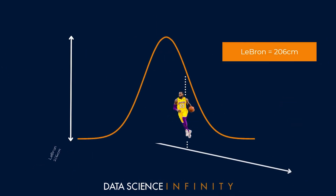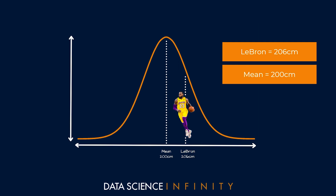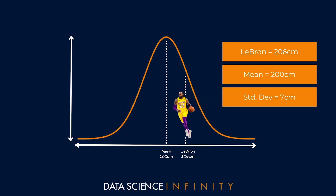Welcome to part three of this statistics made easy series, where we're going to push things even further. We know that LeBron James is 206 centimeters tall, the mean height for players in the NBA is 200 centimeters, and the standard deviation for player heights is 7 centimeters. With all of that information, we are going to answer two key questions.